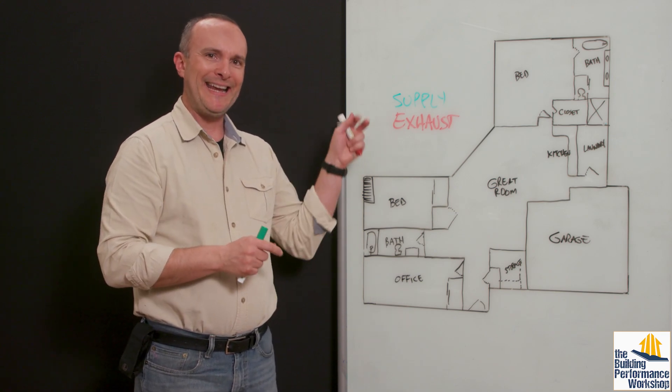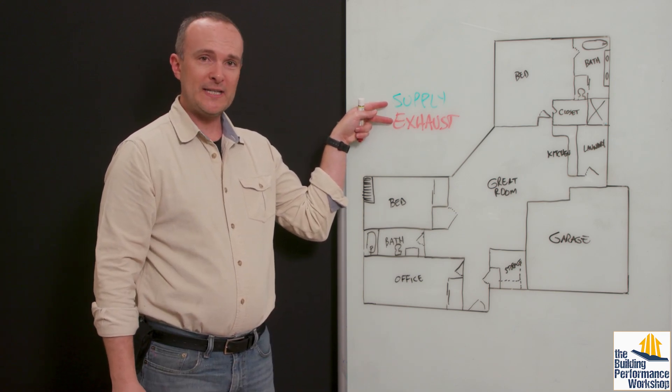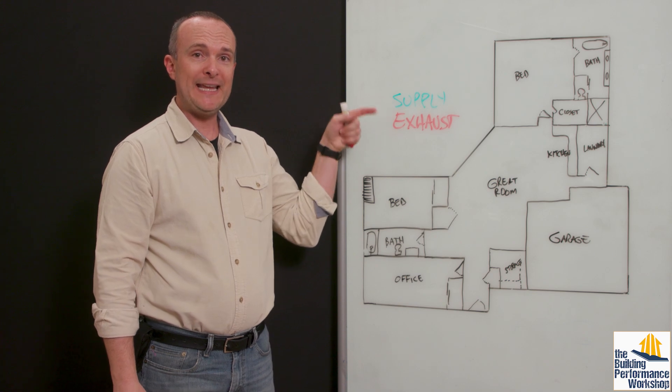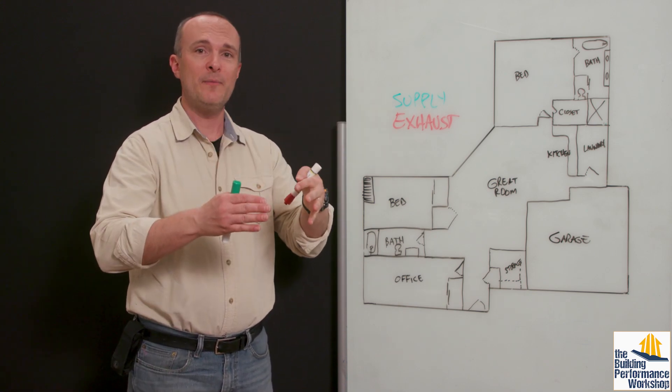So supply and exhaust is what we're looking at. And in an ERV situation, like the ones I just mentioned, it's balanced. You're taking air out of the house, exhaust, and you're supplying air too in equal measure.